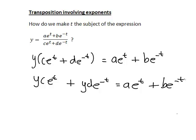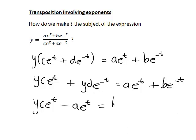We have e^t and e^(-t) terms. There are a few ways to proceed, but probably the clearest is to rearrange so that on the left hand side we have all e^t terms, and on the right hand side all e^(-t) terms. We do this by subtracting ae^t from both sides — leaving yc·e^t minus ae^t on the left — and then subtracting yd·e^(-t) from both sides, leaving be^(-t) minus yd·e^(-t) on the right.